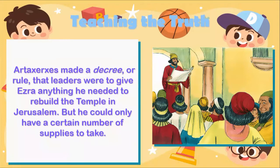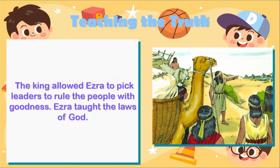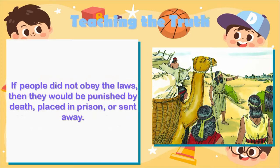Artaxerxes, king of Persia — modern-day Iran — gave Ezra everything he needed for his trip to Jerusalem. He made a decree that leaders were to give Ezra anything he needed to rebuild the temple, though he could only take a certain number of supplies. The king also ruled that none of the temple servants, singers, or workers had to pay any type of tax. The king allowed Ezra to pick leaders to rule the people with goodness, and Ezra taught the laws of God. If people did not obey the laws, they would be punished by death, placed in prison, or sent away.